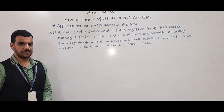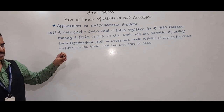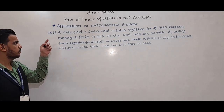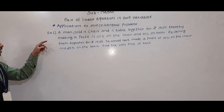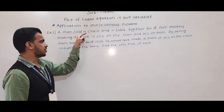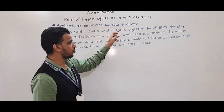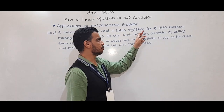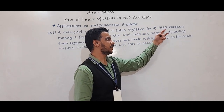Hello students, today we are going to see some more miscellaneous problems. The first one is: a man sold a chair and a table together for Rs. 1520.